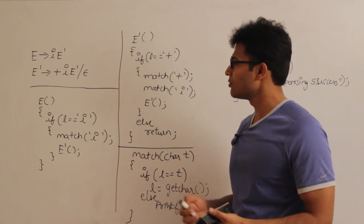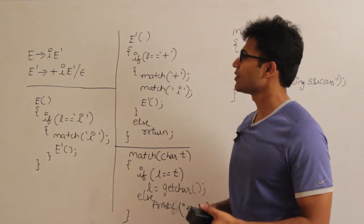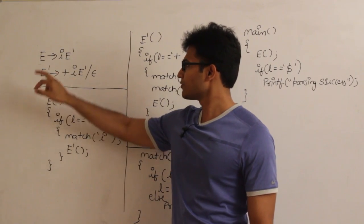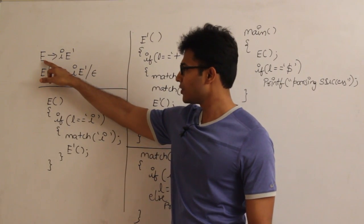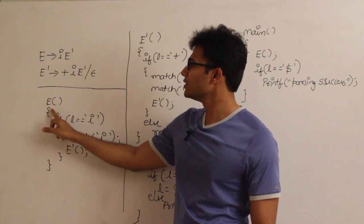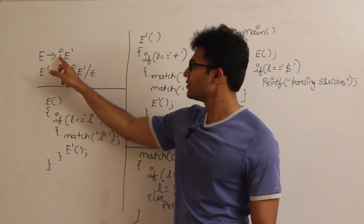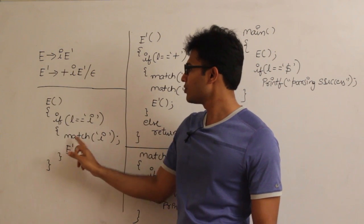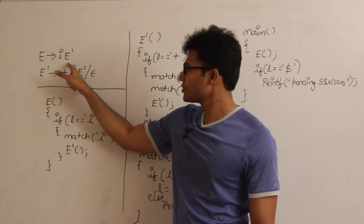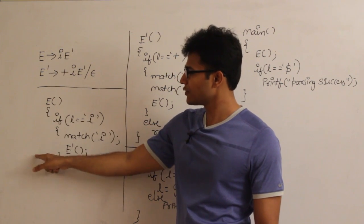It is a top down parser and the name recursive descent came from the fact that for every variable we are going to write a function. For example, for the variable E I am going to write a function: if lookahead equals I then match I and then call E dash. This corresponds to the production E derives IE dash.